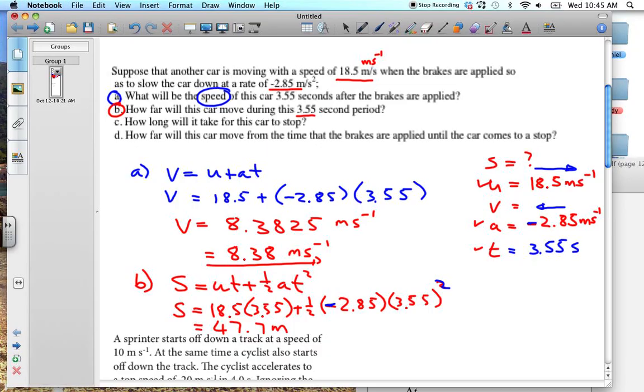How long will it take for this car to stop? In doing that one, we would have to decide, what does this mean? It means that we are looking at this situation. We don't know what our time is. These still remain the same. What do we know about our final velocity? Well, because it's stopped, this is 0 meters per second, so we know that now. And we want to find the time, how long.